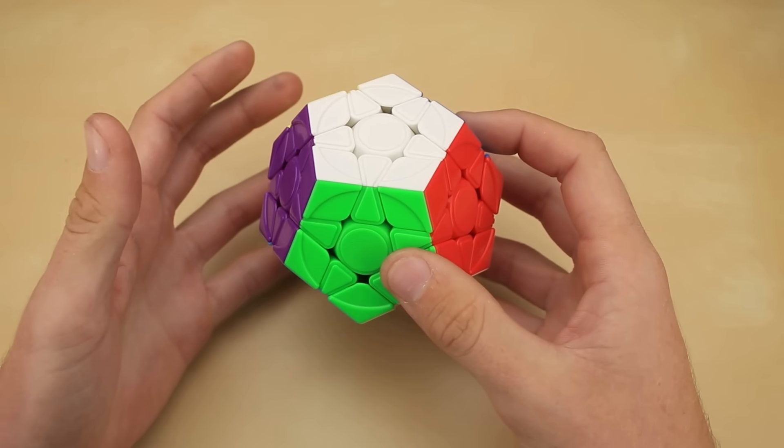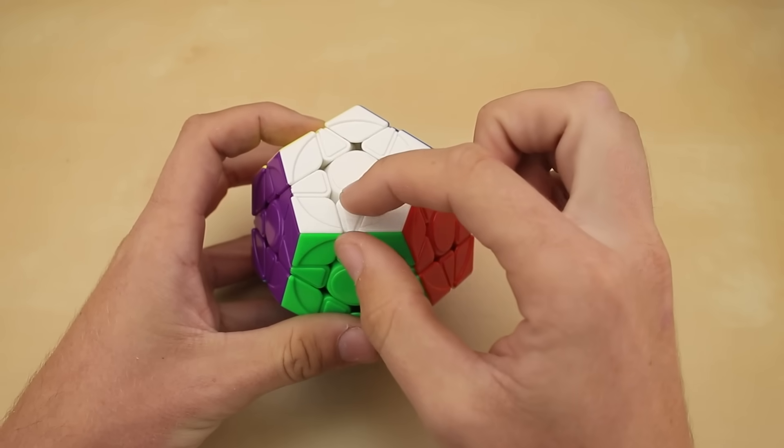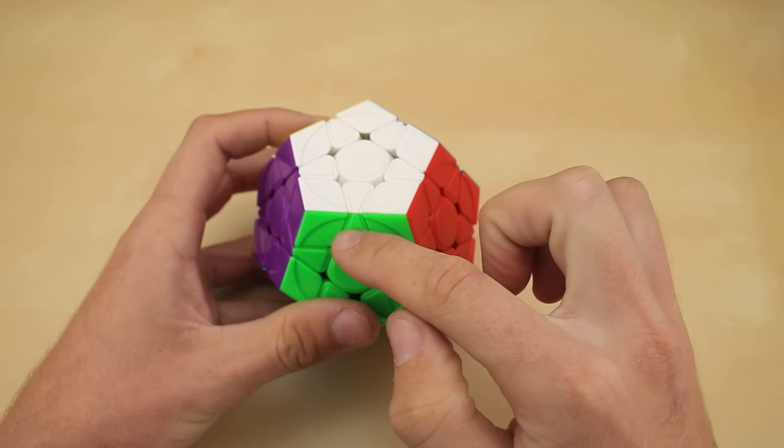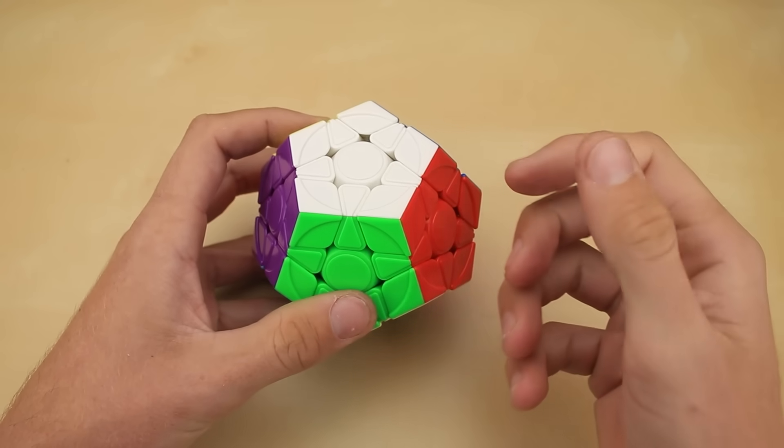And by the way, if anyone's curious where the number 120 comes from, it's because a Megaminx has 30 edges, and if you look at each individual edge, it has to attract to this corner, which requires two magnets, as well as this corner, which requires another two magnets, so 4 magnets per edge times 30 equals 120.